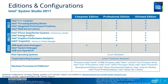Intel System Studio comes in three editions. We have the Composer Edition, which is geared toward simpler developers and offers the optimizing compilers and libraries. We have the Professional Edition, which adds various profilers on top of the Composer Edition. And finally, the Ultimate Edition also adds a system debugger.